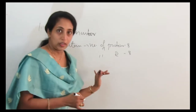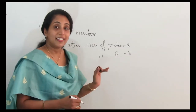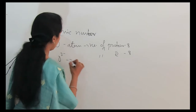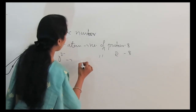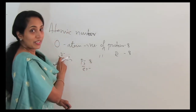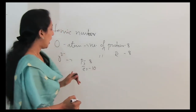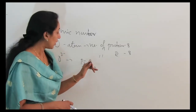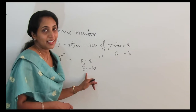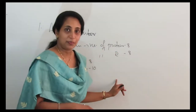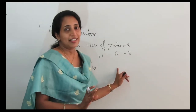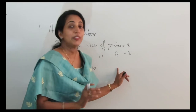But in the case of the O2- ion, we need to define the number of protons and electrons separately, since the ion has gained extra electrons compared to the neutral atom.